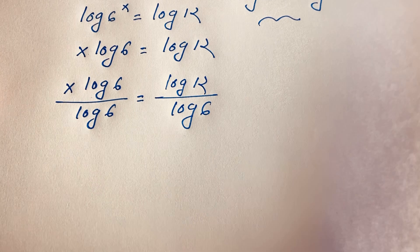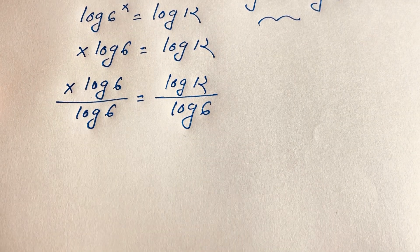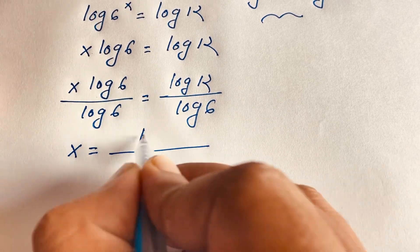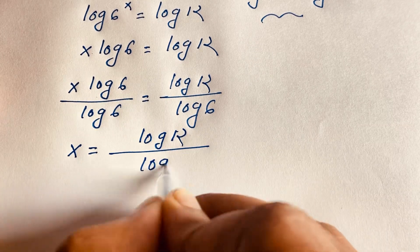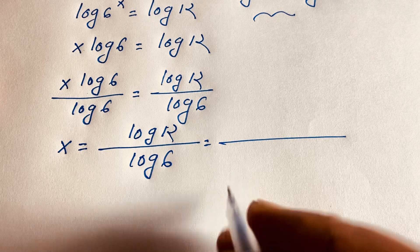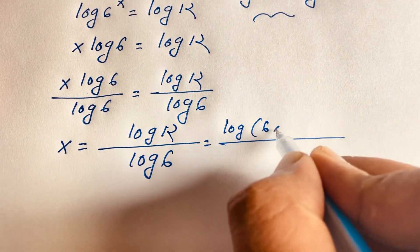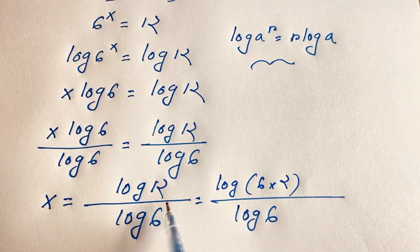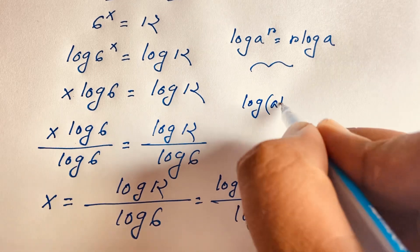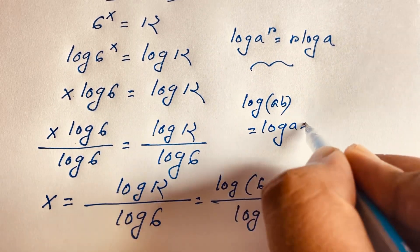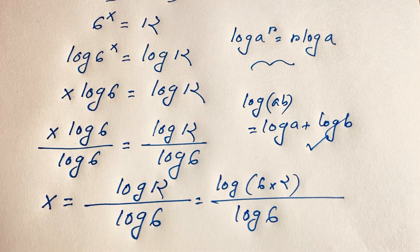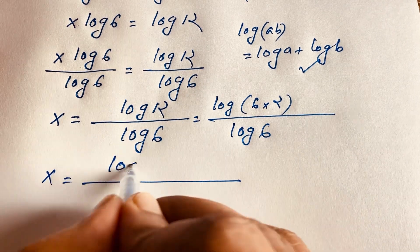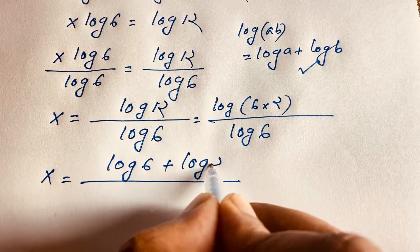We find that x times log 6 over log 6 is equal to log 12 over log 6. The log 6 terms cancel out. Now, under log 12, it will be log of 6 times 2, over log 6. Using the log product rule — log(ab) equals log a plus log b — this expression becomes x is equal to log 6 plus log 2, all over log 6.